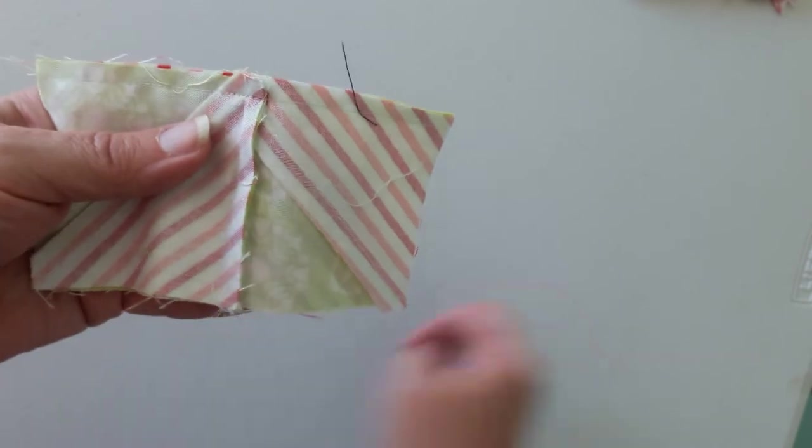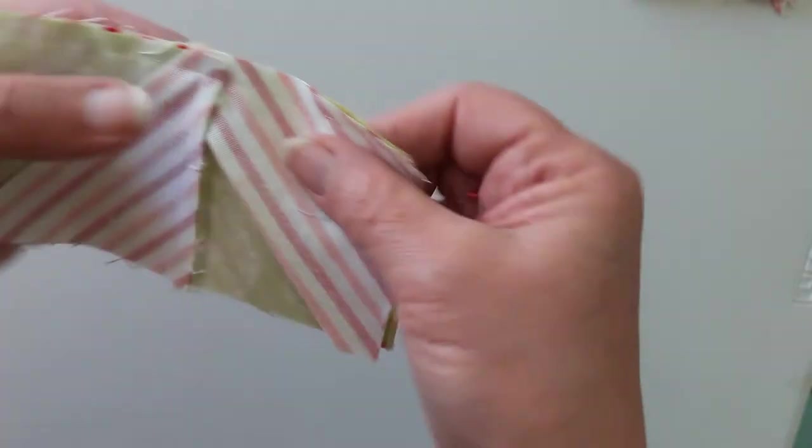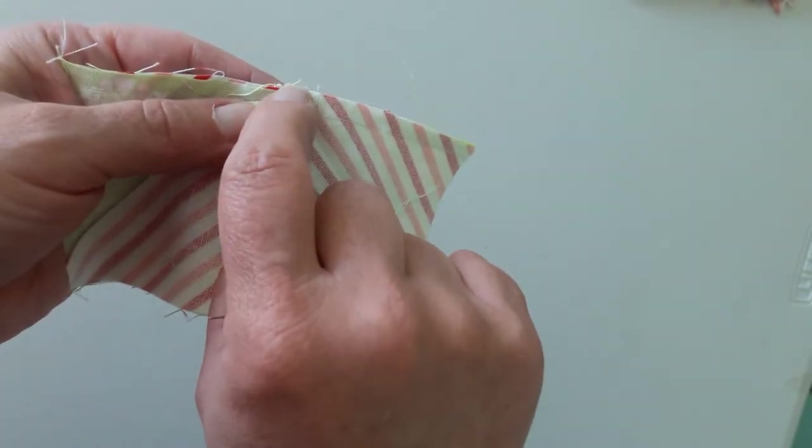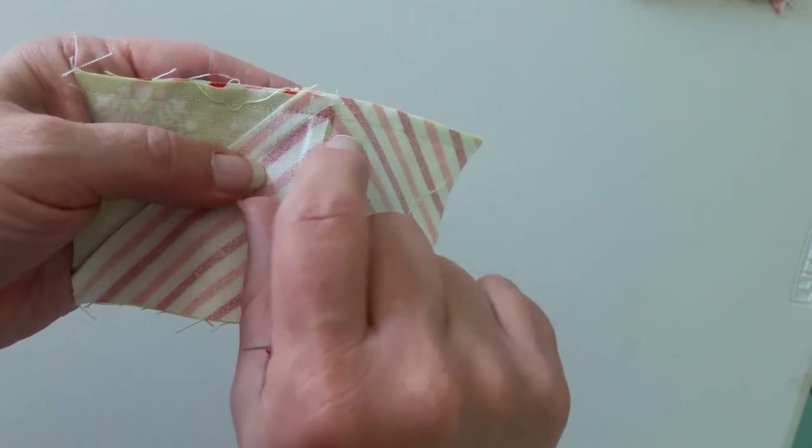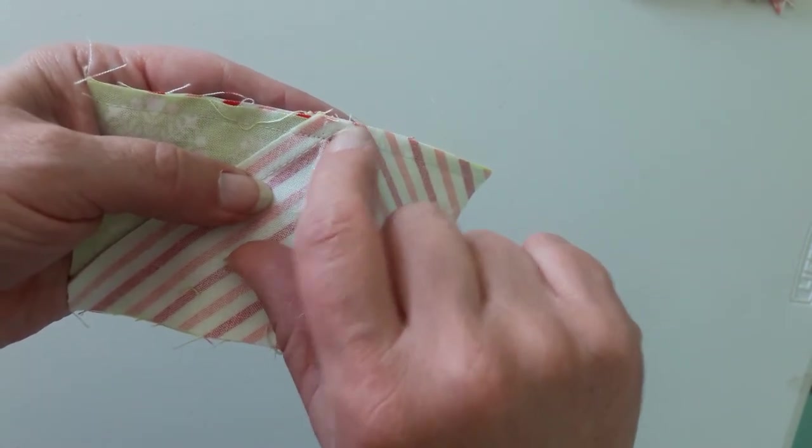So we're going to take our seam ripper. We have a thread here. See the seam that's going this way? This is our long seam. We don't want to cut that. And this is the diagonal. We're not going to do that.